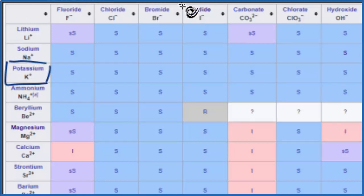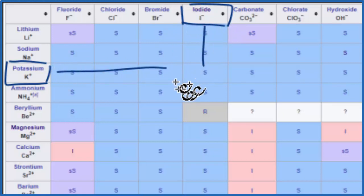Then we want to find iodide, which is right here, I-. We go over and we go down, and that S right there means that KI will be soluble in water. It'll dissociate into its ions: K+ aqueous and the iodide ion I- aqueous. We'll have a soluble compound.